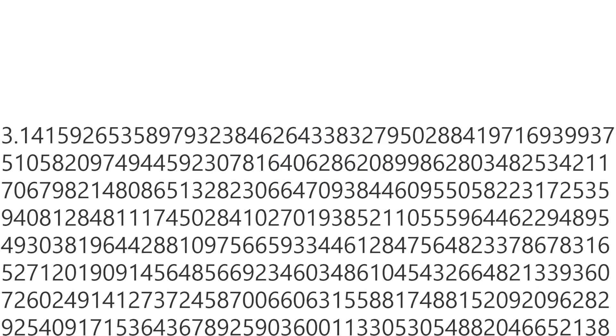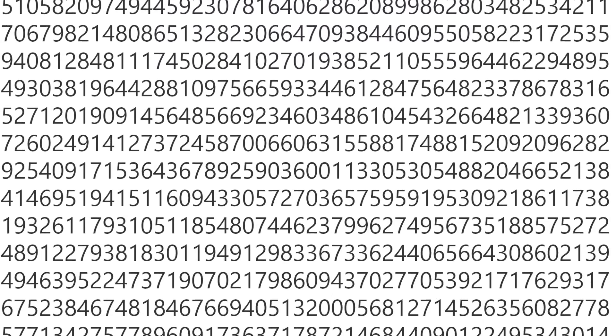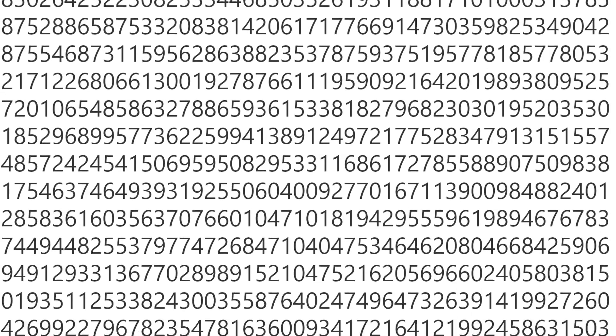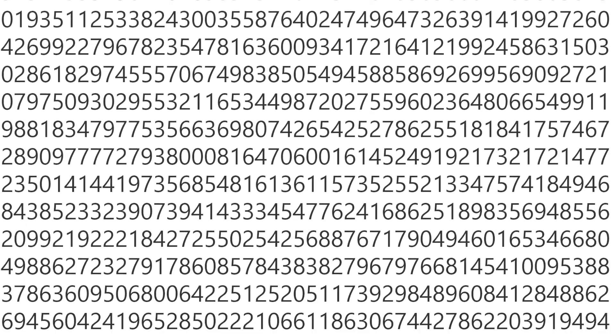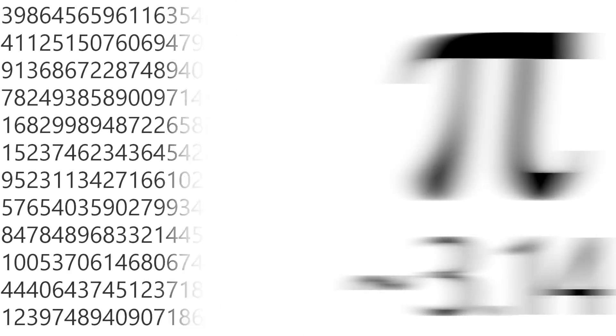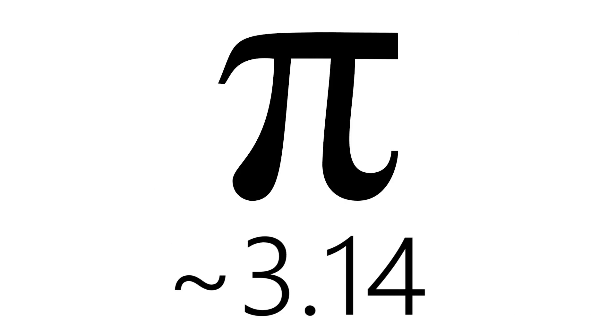The first of those infinities is an infinity that stems from a finite value. For example, the number of decimals in pi go on forever. However, the value of pi is a finite value — it's around 3.14.